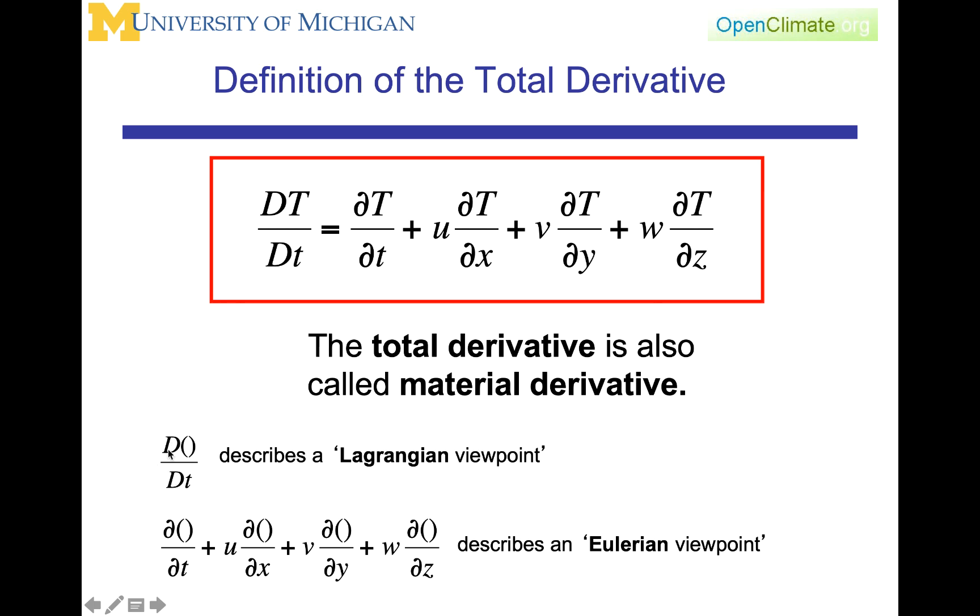If we were following a parcel and looking at the change in the parcel, that's what the total derivative with respect to time is. If we were sitting at a point and looking at the change at a point, then we end up reducing or breaking apart the different ways that the changes at that point can occur.